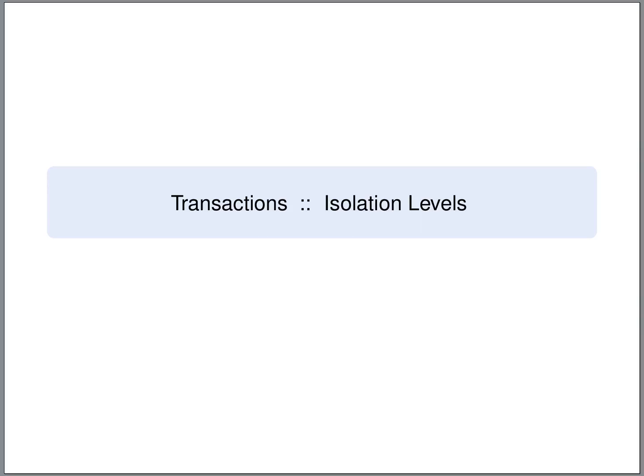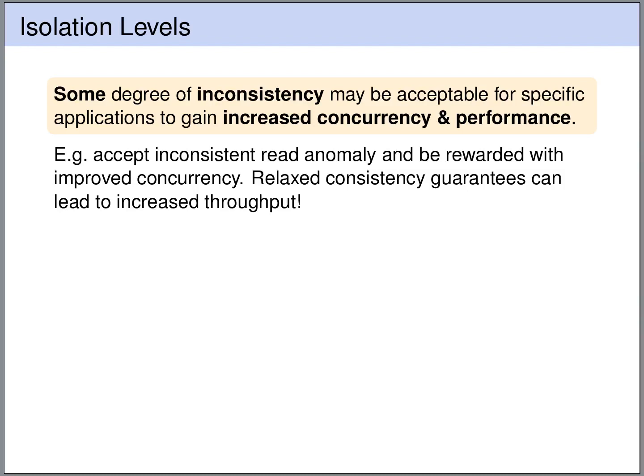Up to now, we've discussed perfect isolation of our transactions. We want our schedules to be serializable, as if the transactions would be executed one after another. However, sometimes a little bit of inconsistency is acceptable if this yields improved performance or concurrency. Accepting inconsistent or dirty reads may reward us with increased concurrency. The general idea is that lowering the consistency guarantees leads to higher performance and more throughput.